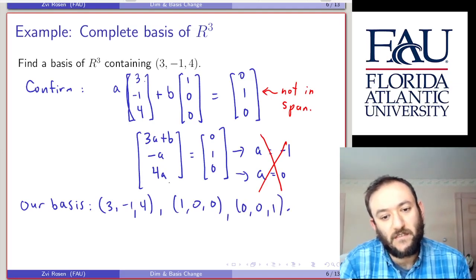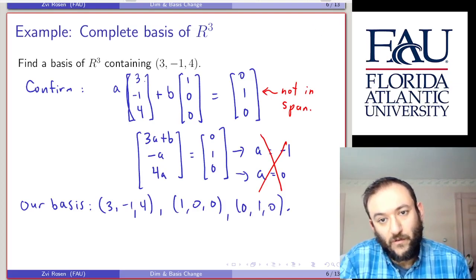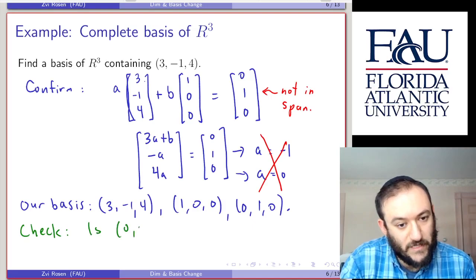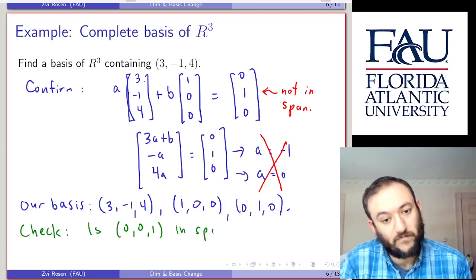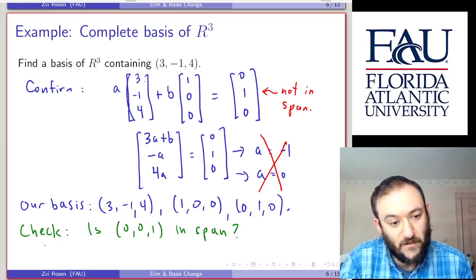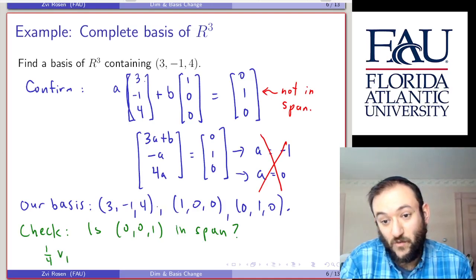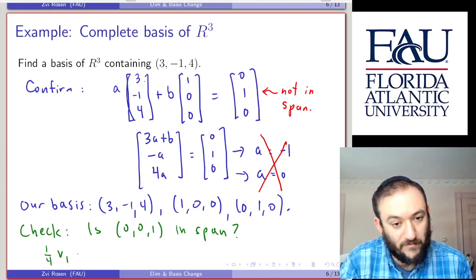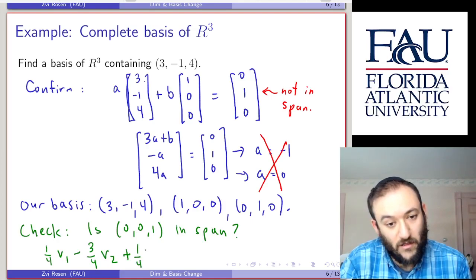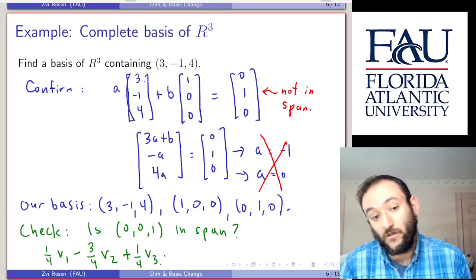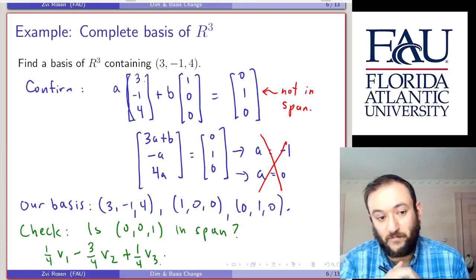We've completed our basis: {(3,-1,4), (1,0,0), (0,1,0)}. These are three linearly independent vectors, and we can confirm they span R3. For a sanity check: is (0,0,1) in the span of these? Yes — take 1/4 of the first vector, which sets the last coordinate to 1, then add -3/4 times v2 and 1/4 times v3 to cancel the other coordinates. Since (1,0,0), (0,1,0), and (0,0,1) together span all of R3, this is indeed a basis.